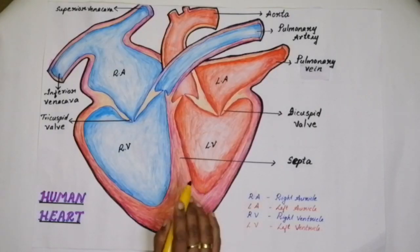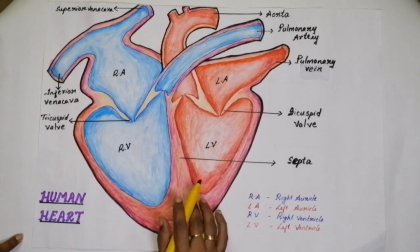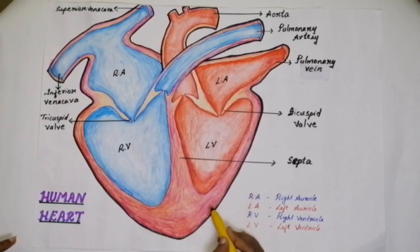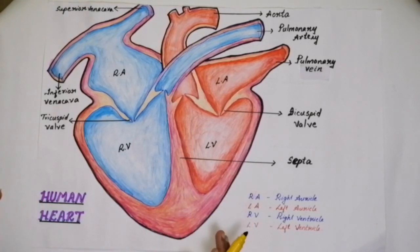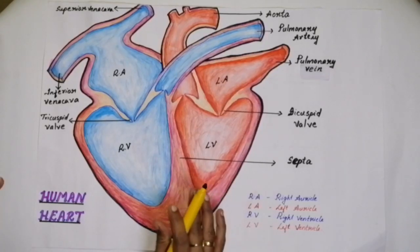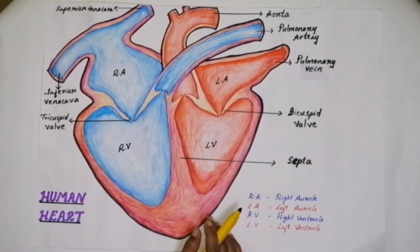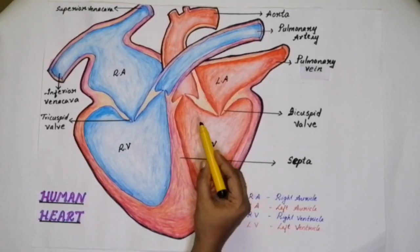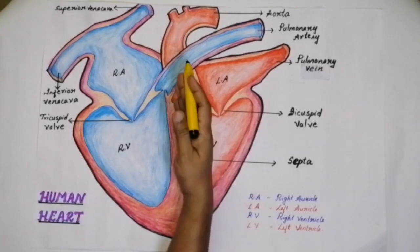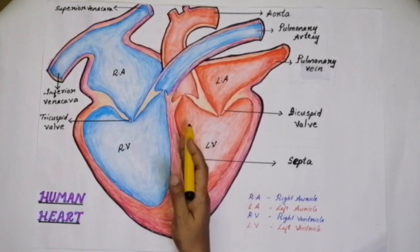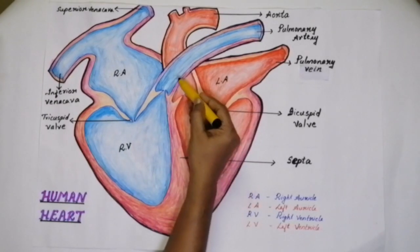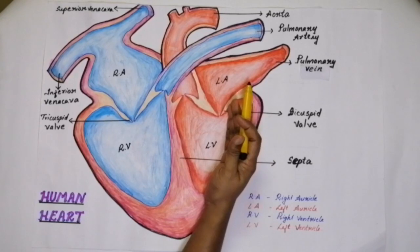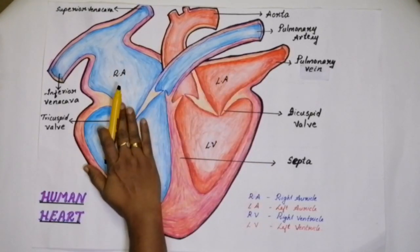Here you can see the longitudinal sectional view of a human heart. A human heart is a soft, spongy, holomuscular organ. The heart is divided into two halves — the left half and the right half.